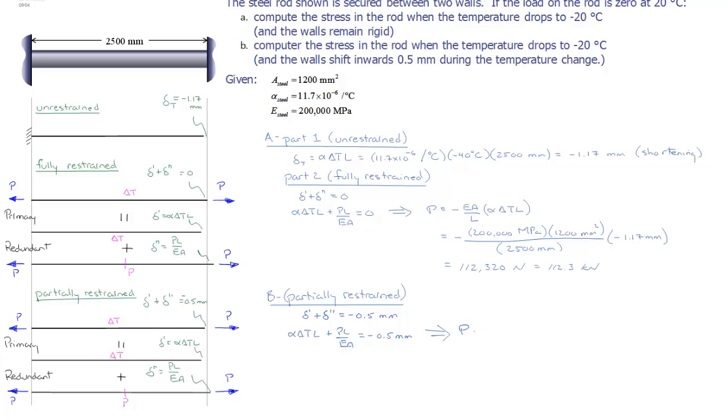this comes out to P equals (alpha delta T L minus 0.5 millimeters) times EA over L.